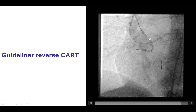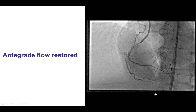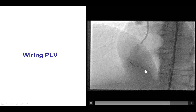The wire was trapped into the guide, and then the Turnpike LP advanced, followed by externalization of an R350. Balloon angioplasty was done, restoring antegrade flow. There was disease in the posterolateral branch, and that is why that branch was wired. A kissing balloon inflation was then performed.